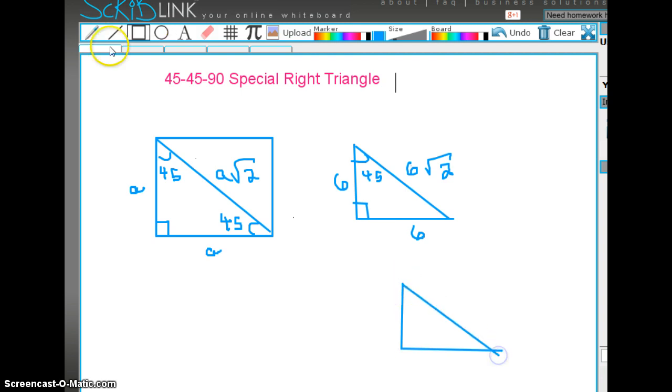Suppose we're given the 45-45-90 triangle, and say this side right here was 10 radical 2. Then you can use this formula instantly to realize that this is A radical 2, so the other sides would be 10 units. That's kind of really fun.